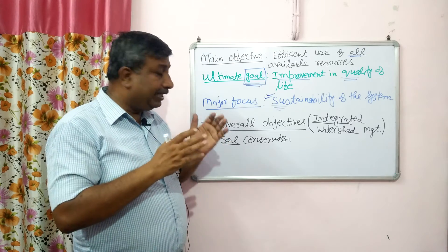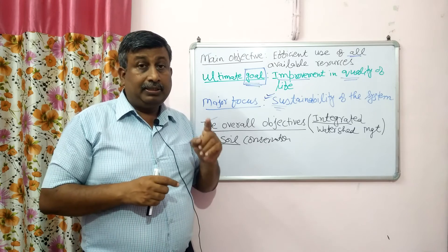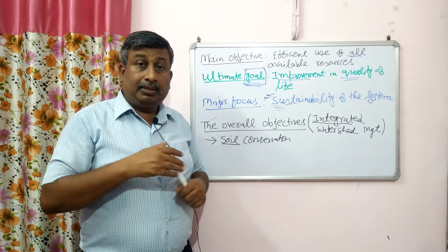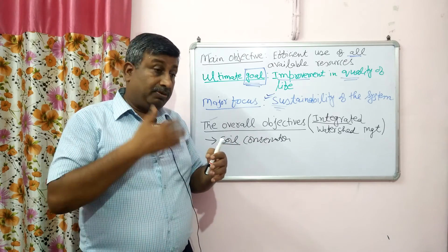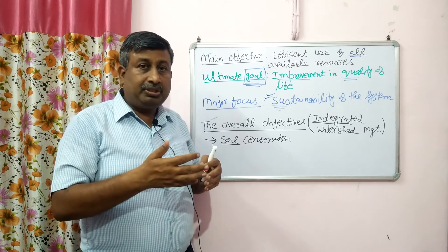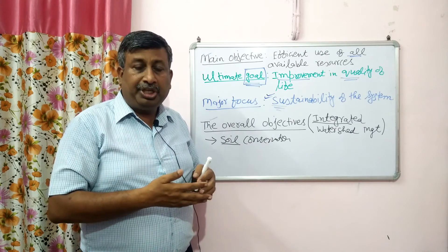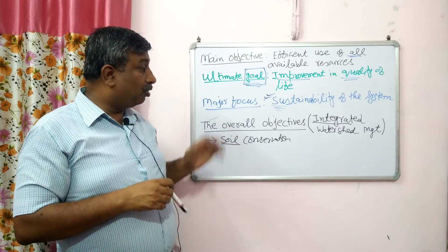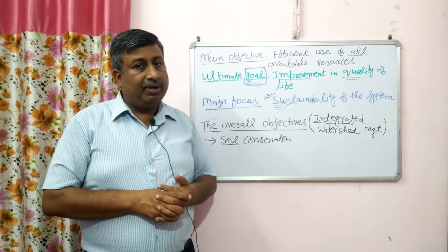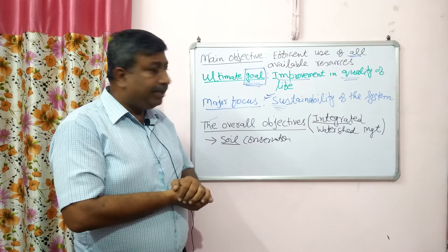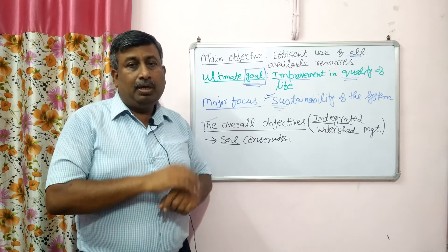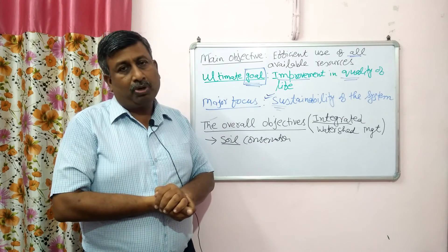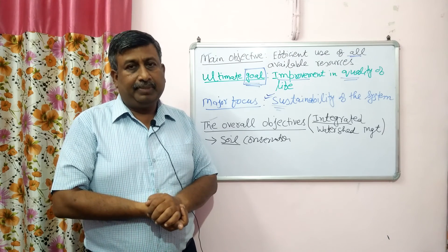The major objectives are conservation of land and water resources — water conservation through harvesting structures and soil conservation by reducing runoff. Other objectives include developing farming and cropping systems, developing non-arable land through forestry, pasture, and horticulture, plus recreation facilities, employment opportunities, income generation, and cottage industries. These overall objectives are also known as integrated watershed management. This was the lecture about the main objective, major focus, ultimate goal, and the overall objectives of watershed management. Thank you very much.